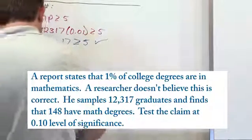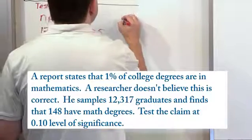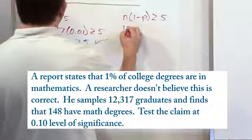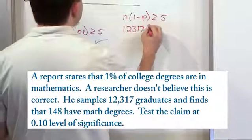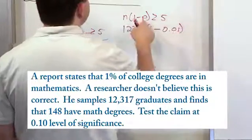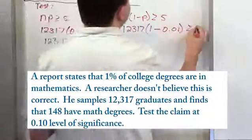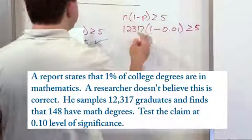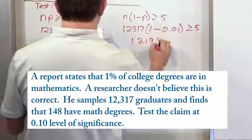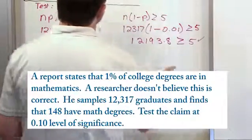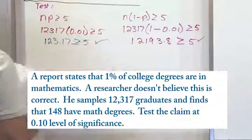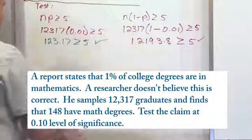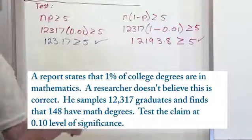Now we test the other constraint: n times (1 minus p) is also greater than or equal to 5. n is 12,317. 1 minus 0.01 comes from the null hypothesis. I'll spare you the gory details - when you subtract and multiply by this large number, you get 12,193.8, which is way bigger than 5. So because we have a large enough sample size, we're allowed to use the normal distribution, which makes it much simpler.